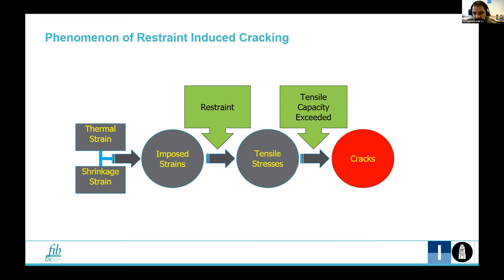The imposed restraint can be externally applied by the adjoining members or internally by thermal gradients and steel reinforcement present in the concrete. It is expressed as degree of restraint and its value ranges between 0 for no restraint and 1 for perfect restraint.